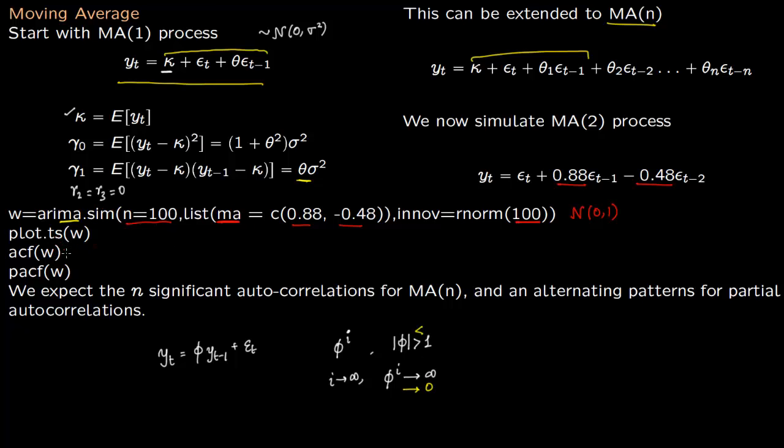You can find the autocorrelation function and partial autocorrelation function. Now in this case, the partial autocorrelation function is not useful. We saw in AR form that partial autocorrelation function was very important. Here it is not. Here this autocorrelation function will give you the values because we are dealing with these normal random variables. We are adding white noise to it, not adding past processes. So if you keep on taking past processes out, it is not going to impact anything. So what we expect is n significant autocorrelations for MA(n). So here we have MA(2), so we want two significant autocorrelations. That is, if you see the autocorrelation graph, you should find two values which are significant. And we have alternating patterns for partial autocorrelations.